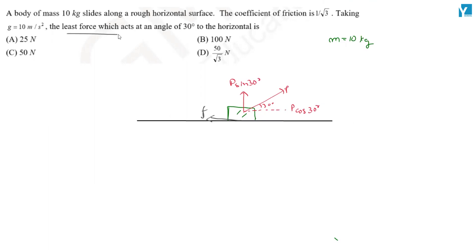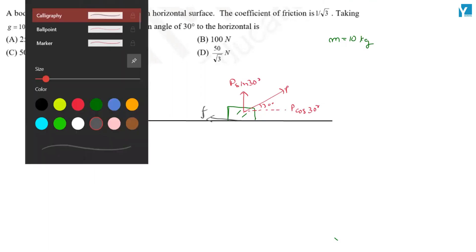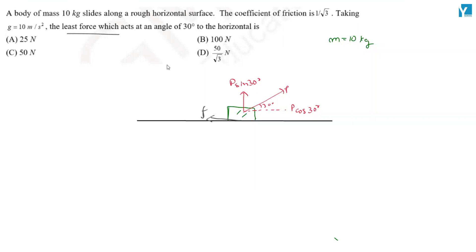Now, I have to tell the least force which acts at an angle of 30 degrees to the horizontal. When the least force is moving, this block will be just about to move. So at that time, acceleration will be 0.